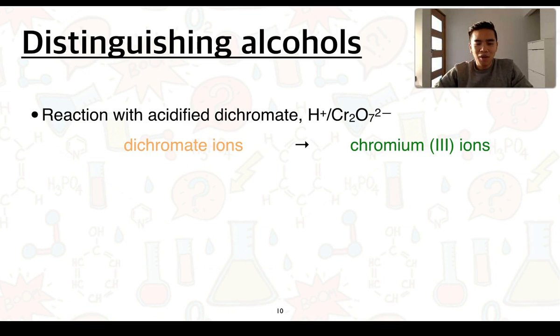If acidified dichromate reacts with alcohols it gets converted into chromium three ions. So Cr2O7^2- goes to produce Cr^3+ and this corresponds to a particular color change. So dichromate solution is orange in color and then this can form chromium three ions which are green in color.